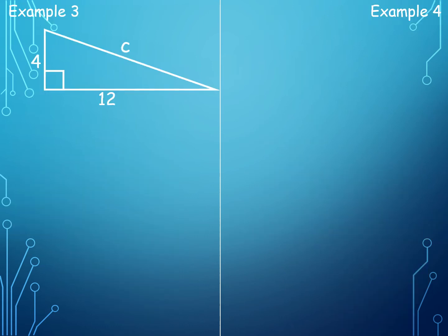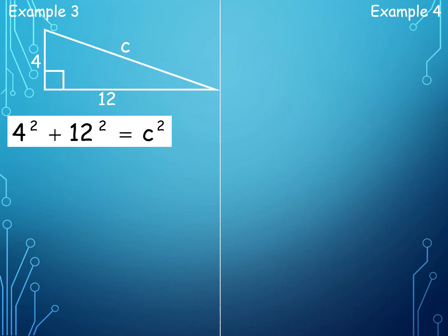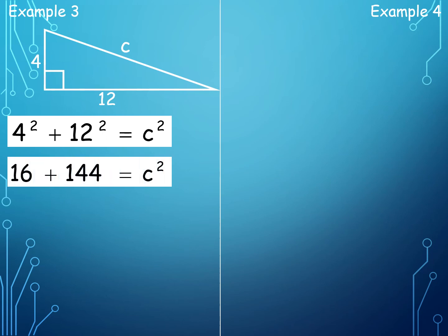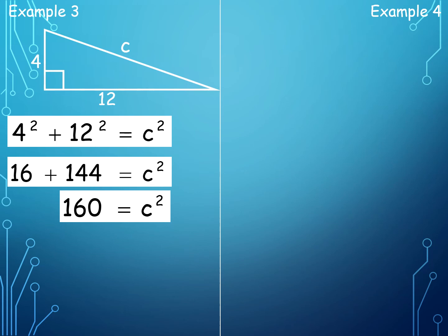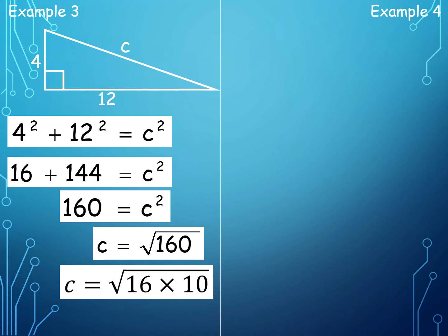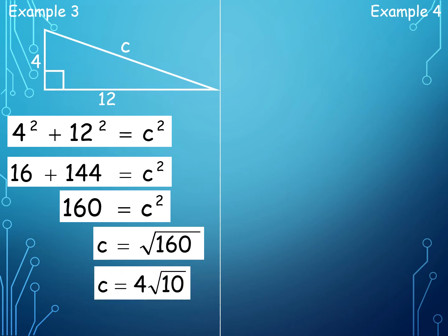Now let us have another one. To solve for C, we have 4 squared plus 12 squared. 16 plus 144 is equal to 160. 160 is not a perfect square, so we factor it where one factor is a perfect square: 160 equals 16 times 10. The square root of 16 is 4, so C is equal to 4√10. If you want to simplify it further, it is equal to 12.65. Either of the two will do.